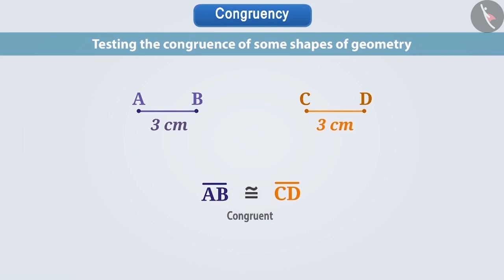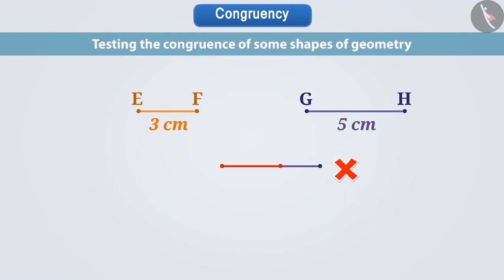If the lengths are not the same, say the line segment EF is equal to 3 cm and the line segment GH is equal to 5 cm, then they do not completely cover each other. So in such a case, two line segments are said to be not congruent. And we write it as this.